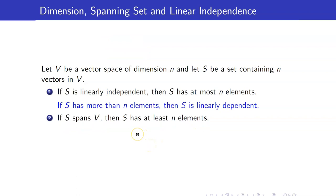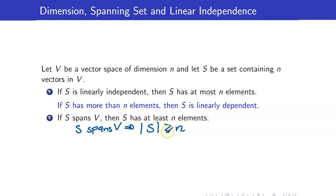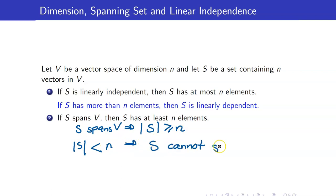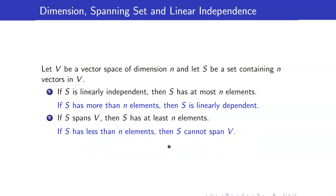Next: if S spans V, then S has at least n elements — meaning the cardinality of S is greater than or equal to n. The contrapositive of this is: if the cardinality of S is less than n, then S cannot span V. It's very important that you memorize this theorem thoroughly.